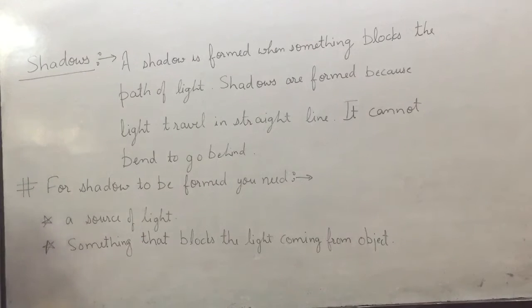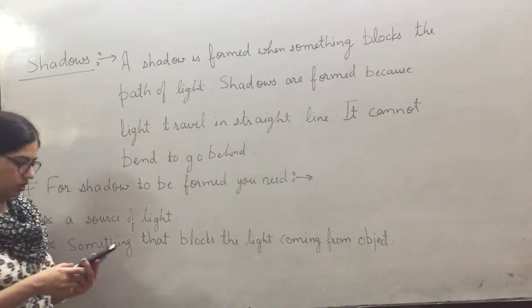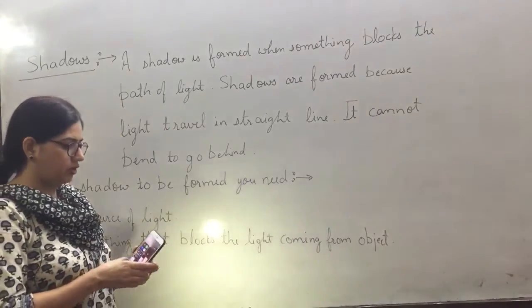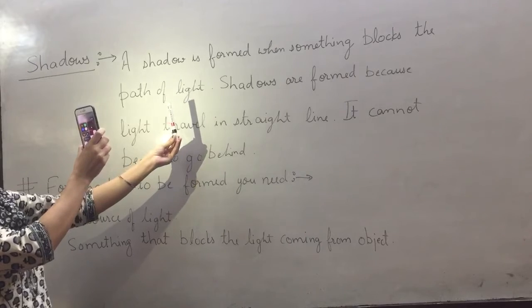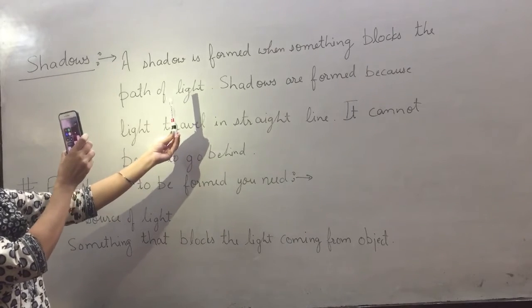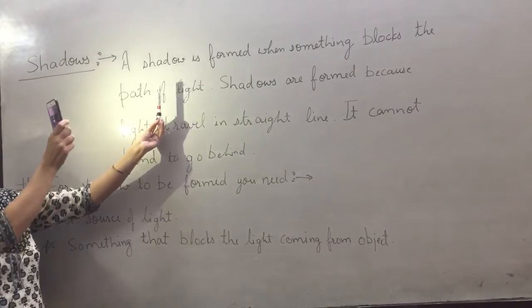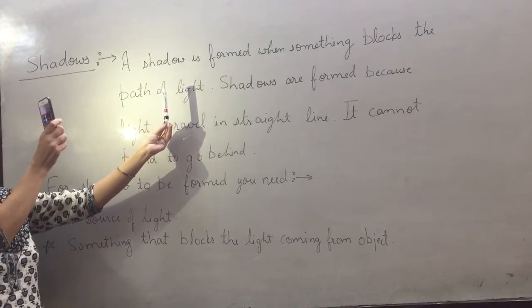For example, this is a torch. I have a pen and this pen is blocking the path of light. You can see clearly a shadow of a pen is formed.